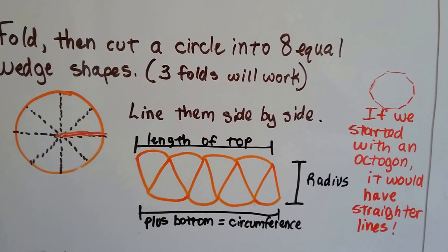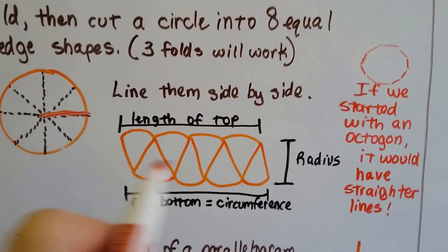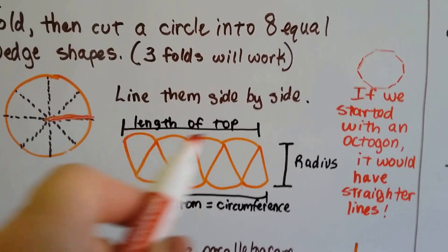We can line the wedge shapes up side by side, like I did here, and it sort of looks like a parallelogram, doesn't it?